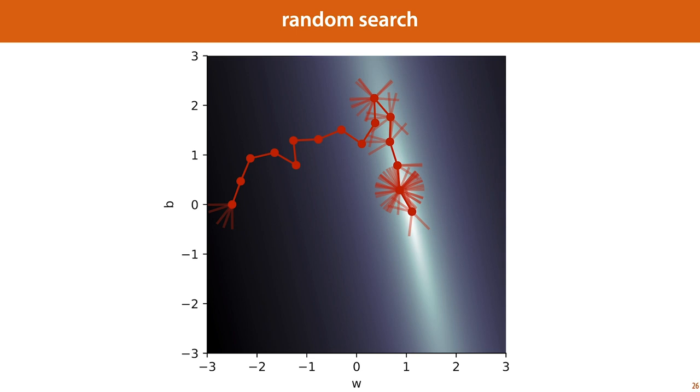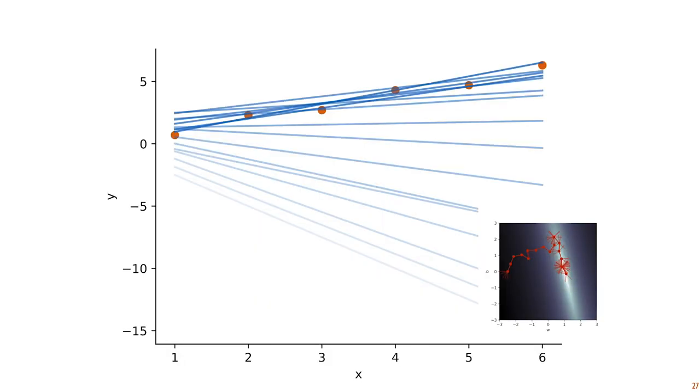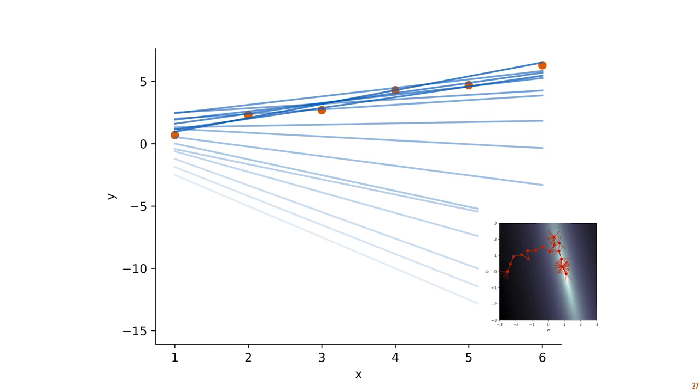We started on the left here, and what you see in slightly transparent steps are the guesses for next points that failed, that meant we would end up with a higher loss than the original P. And the opaque lines are the steps that were successful, the steps in the direction of a lower loss. And you can see that the structure of the trajectory is a bit random, but ultimately we do end up in a region of low loss. And here's what that looks like in the feature space.